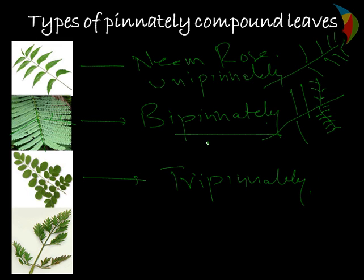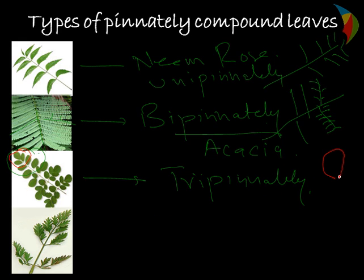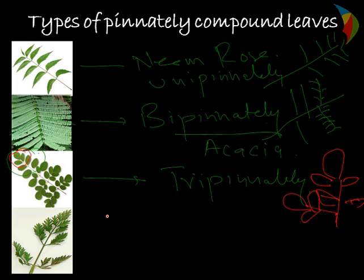In the case of bipinnate, the example is Acacia leaf. The third type is tripinnate. In the image you can see it is a tripinnate leaf — one leaf is like that, two small leaves are there, and the rest of the leaves are on the lower side. This is from the tripinnately compound leaves, and this is commonly seen in Moringa.